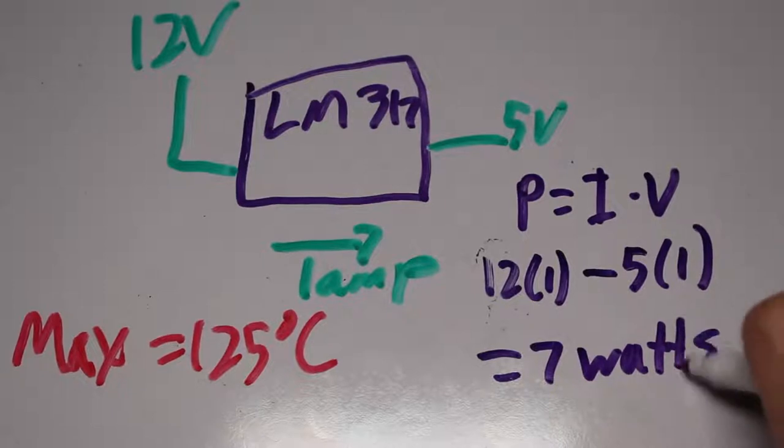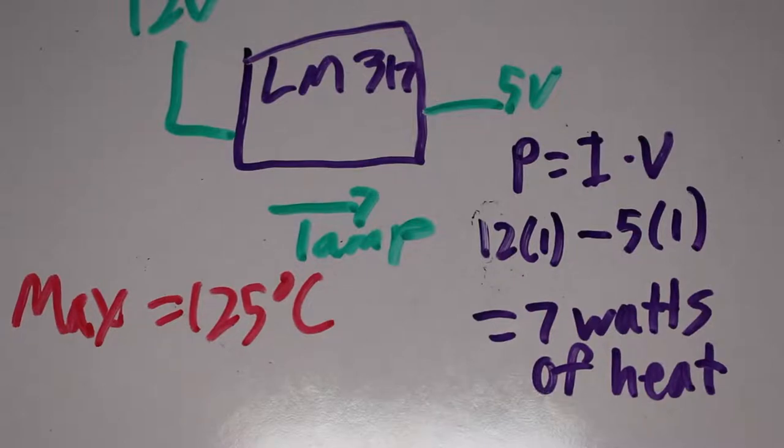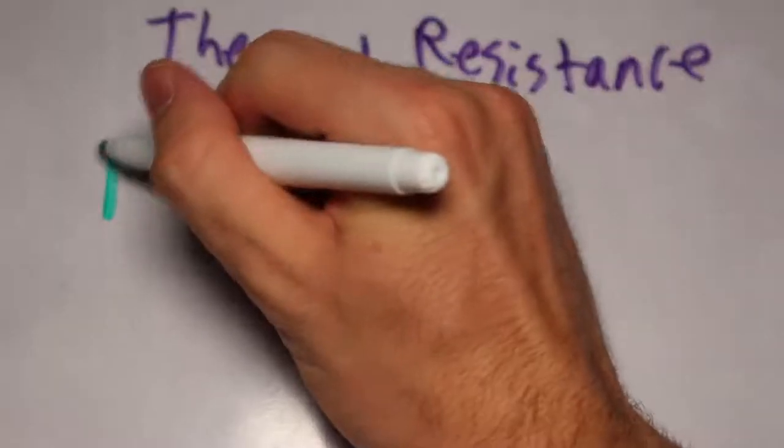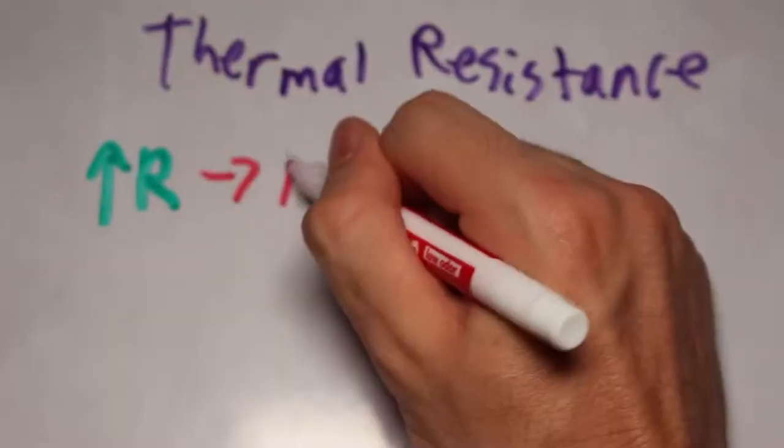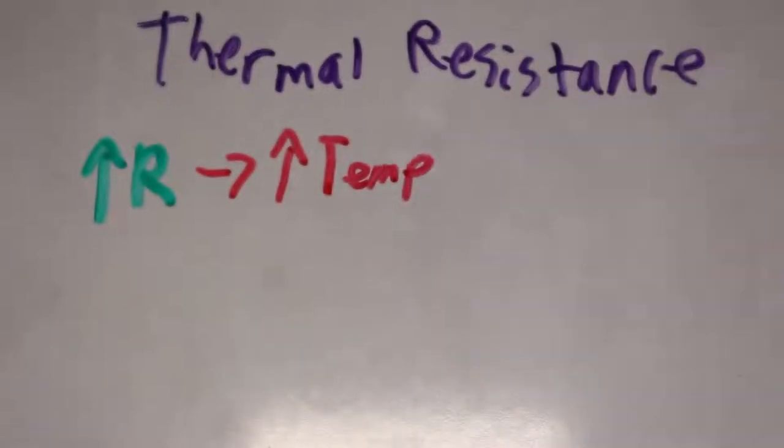But how do we know how much heat that will generate? Well, that brings us into the concept of thermal resistance. You can think of it as sort of like electrical resistance, in that with a higher resistance, less heat will be able to flow. So, in other words, a higher thermal resistance leads to a higher temperature.